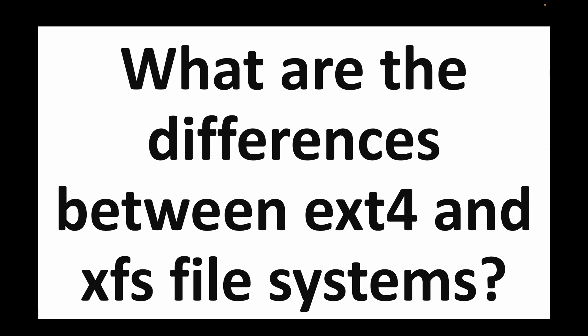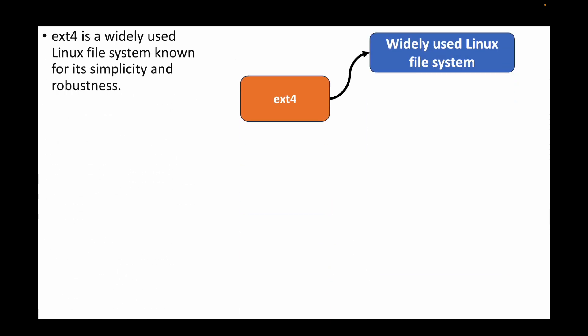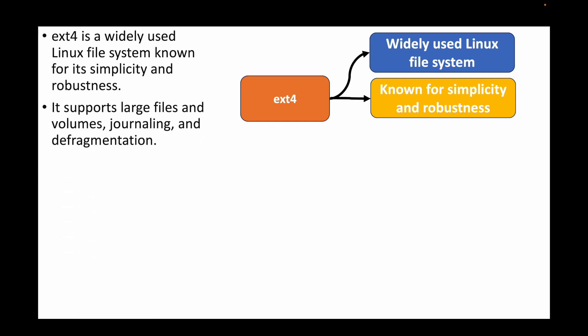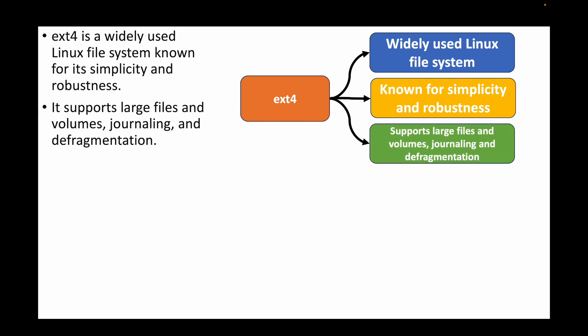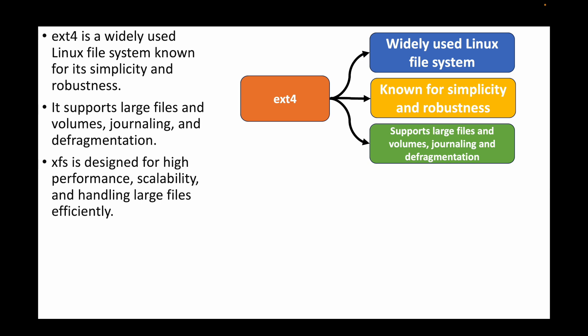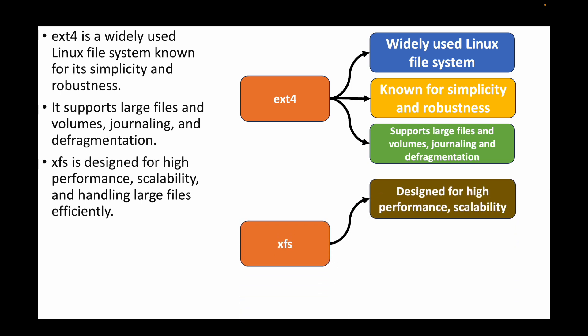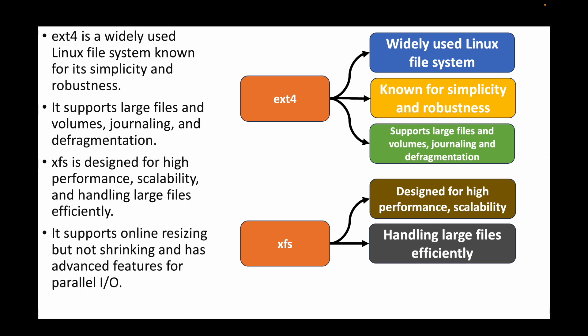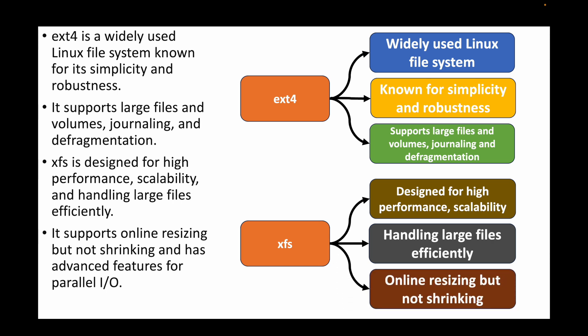The final question is: what are the differences between ext4 and xfs file systems? ext4 is a very widely used file system known for its simplicity and robustness. It supports large files and volumes, journaling, and defragmentation. XFS, on the other hand, is designed for high performance, scalability, and handling very large files efficiently. XFS also supports online resizing but does not support shrinking, and has advanced features for parallel I/O. Overall, ext4 is more widely used than XFS.